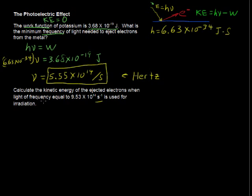The next question says, what will be the kinetic energy of the ejected electrons when light of frequency equal to 9.53 times 10 to the 14th per second, or s to the negative 1, is used for irradiation. So this is a little bit higher frequency than the minimum frequency needed. So we're going to not just dislodge the electron, but it's going to have some kinetic energy. It's going to be moving away with some kinetic energy.